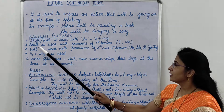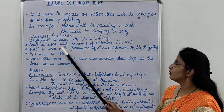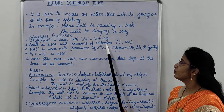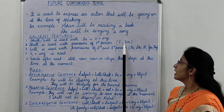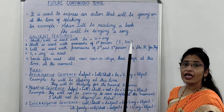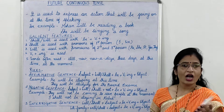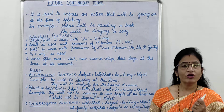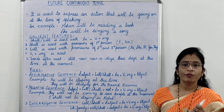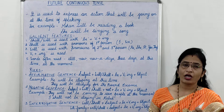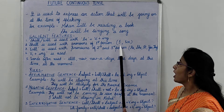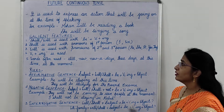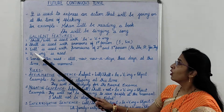Second is, shall is used with pronouns of first person, that is, I and we. Shall शब्द pronouns के first person के साथ प्रयोग होता है, जो कि I और we होते हैं।